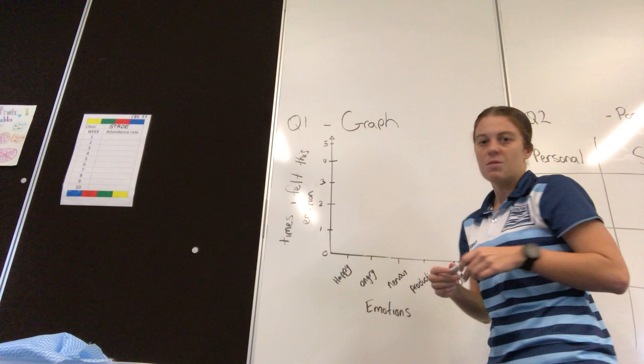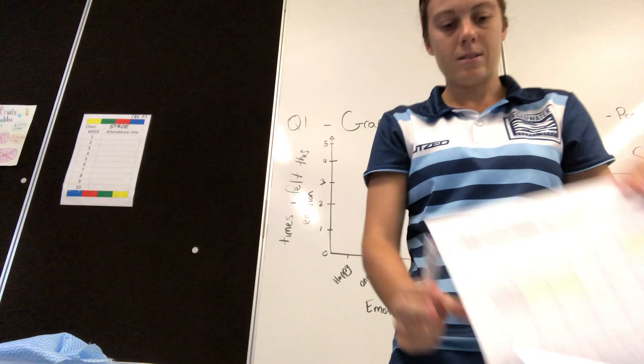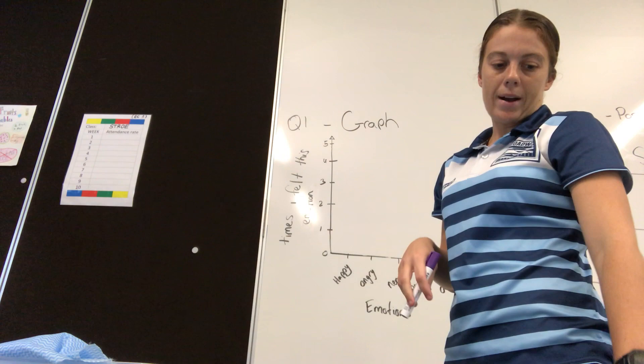For Question 1 of that template, you are asked to create a graph — a very simple graph, whatever you want to create. It's nothing too fancy. I just want to get you guys starting to collect this information a little bit better. From your mood trackers, I want you to create a graph with the emotions that are attached to it.